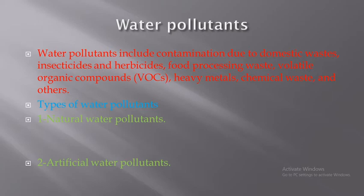There are two types of water pollutants. The first one is called natural water pollutants and the second is artificial water pollutants. Natural water pollutants may arise from natural phenomena such as volcanic eruption, death of living things, and lightning and accompanying thunderstorms.